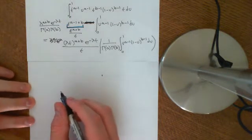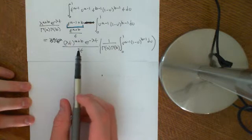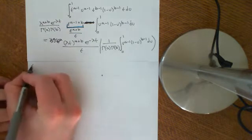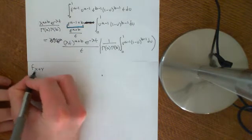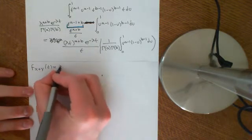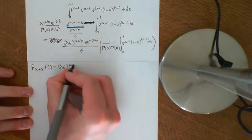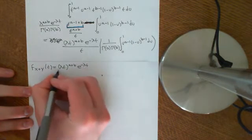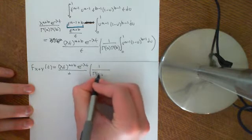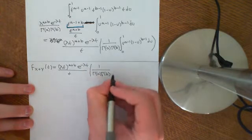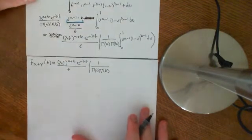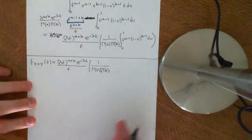Welcome to this next video in the theory of probability. We're going to continue with our discussion of the convolution of two general gamma distributions. So far we have that the PDF of the convolution of two independent gamma distributions X and Y, as a function of little t, is equal to λ to the power of a+b, e to the negative λt, over t, times the constant 1 over Γ(a) · Γ(b). You set a and b when you chose these gamma distributions — those are just constants you can plug into the gamma function.